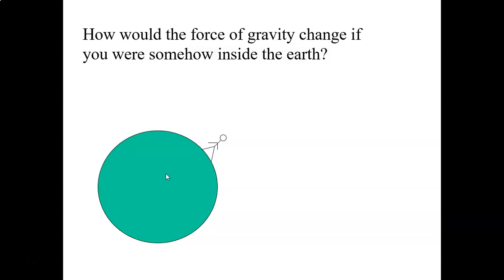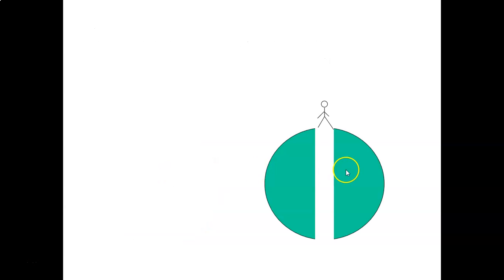How would the force of gravity change if you were somehow in the Earth? So let's say you jumped in a hole. Let's say you were right here. Would the force of gravity on you be stronger or weaker if you were, let's say, halfway to the center of the Earth? Well, believe it or not, it would actually be weaker because now part of the gravity is pulling you up and part of you is pulling you down. Now there's more that's pulling you down. But the part that's pulling up is going to cancel out with some of the part that was pulling you down, so the gravitational field strength would actually be weaker once you get inside a planet.